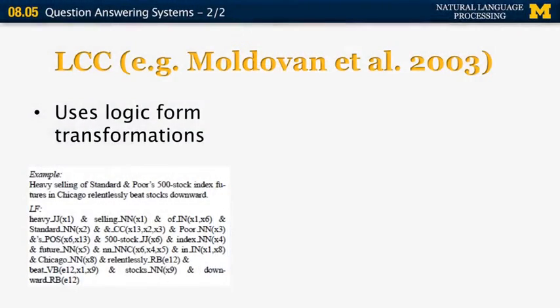It involves some deep semantic analysis of sentences — it converts them into logical forms. Here's an example from the paper: the sentence 'heavy selling of Standard and Poor's 500 stock index futures in Chicago relentlessly beat stocks downward' is represented as a logical form. For example, 'heavy' is an adjective that relates to x1, 'selling' is also related to x1, and 'of' is a preposition that connects x1 and x6.